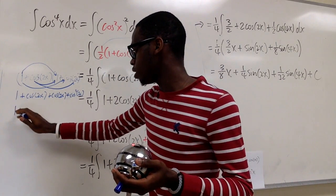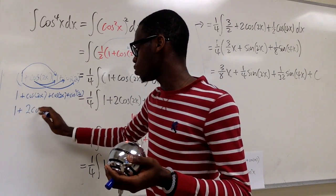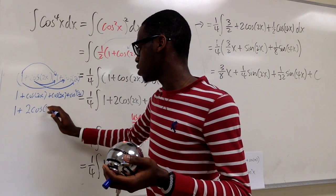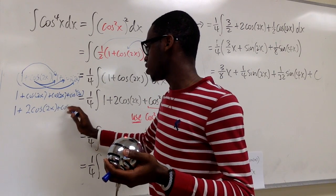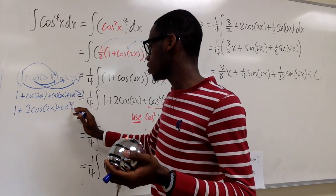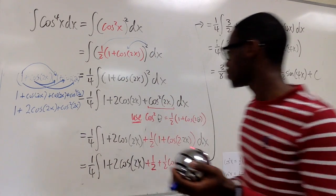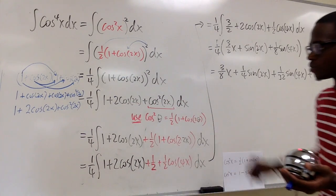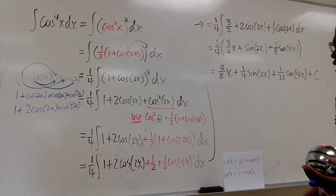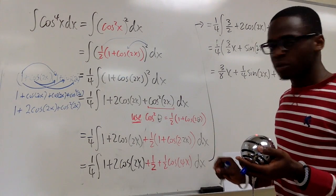Now we combine like terms. We have 1 plus 2·cosine(2x) plus cosine squared(2x), which is what we have here. Now we want to take the integral, but there's a small problem — we have to fix the cosine squared term.